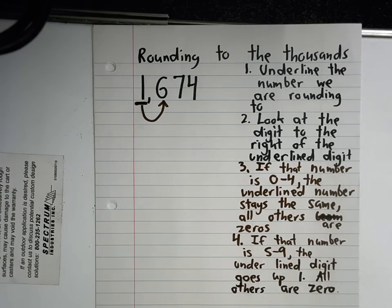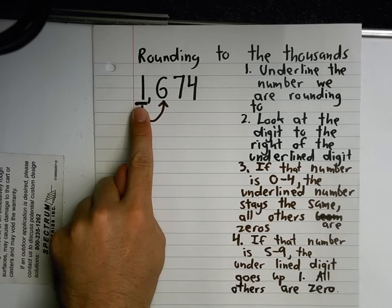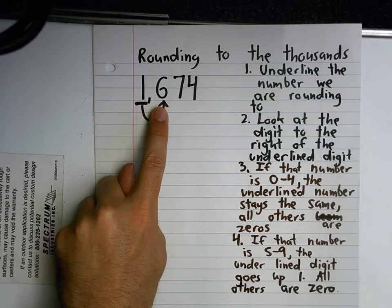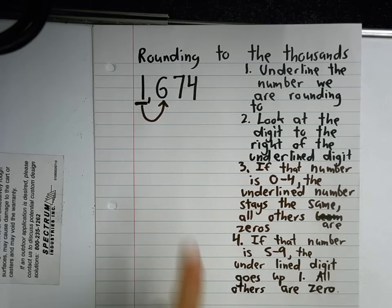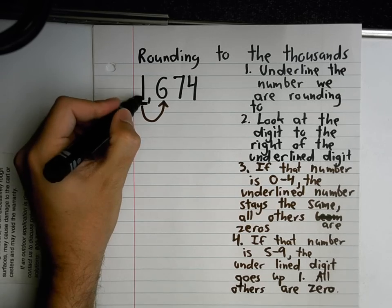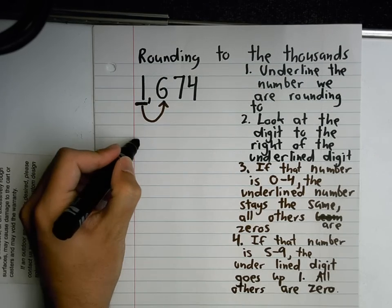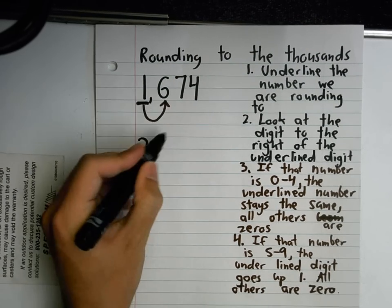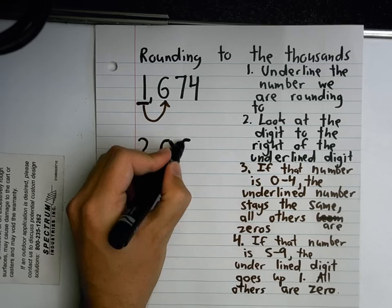I have 1,674 and I am going to round to the nearest thousands place. I underlined my number in the thousands place, then I looked at the number directly to the right of it — it's a six. Does that mean I'm going to move my thousand up one, or is it going to stay the same? Up one. What's my new number going to be? Two thousand, because this underlined digit goes up one and all these others become zeros.